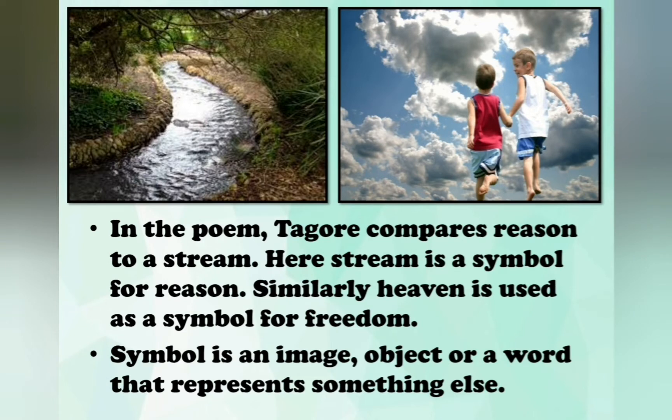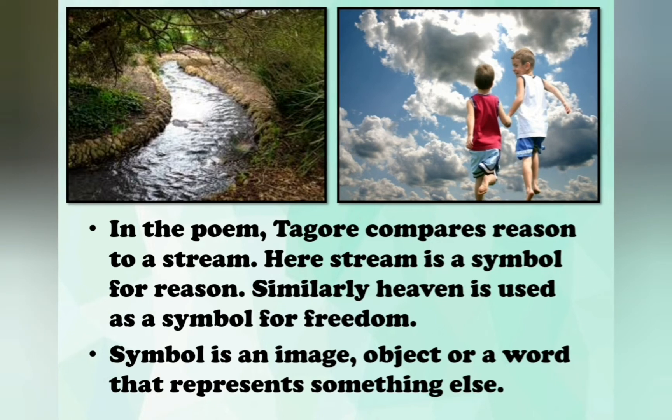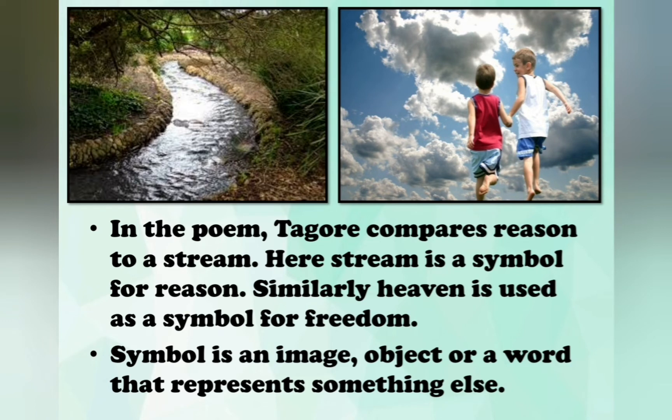progress and prosperity. Our country will become a heaven and the future will be filled with happiness. In the poem, Tagore compares reason to a stream — here stream is a symbol for reason. Similarly, heaven is used as a symbol for freedom. Now, what does a symbol mean? A symbol is an image, object, or a word that represents something else.